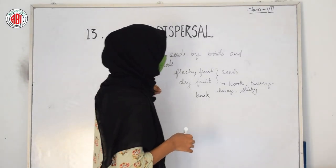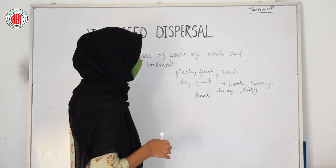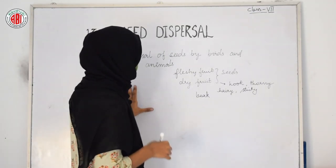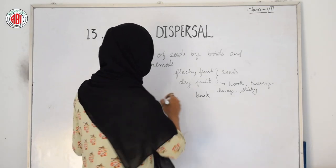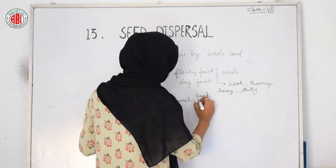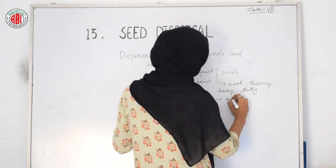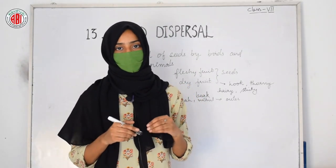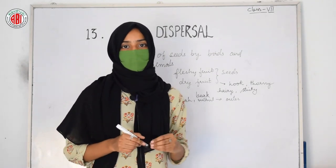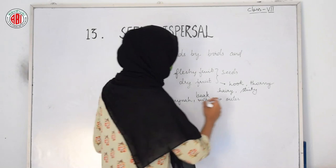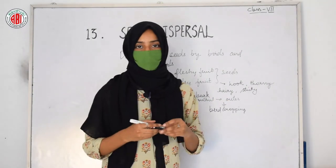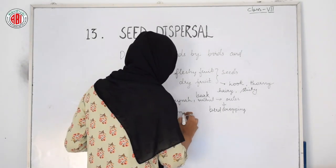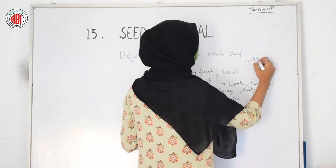Birds like crows, myna, and bulbul eat the outer part of fleshy fruits. The seeds inside pass through their digestive canal and fall as bird droppings. Some birds and animals eat the whole fruit along with the seed, and the seed can be dispersed in their excretory material — some seeds are dispersed through animal excretions.